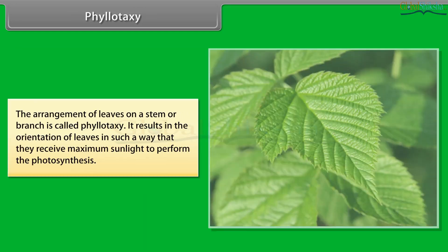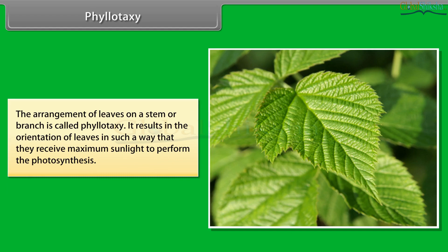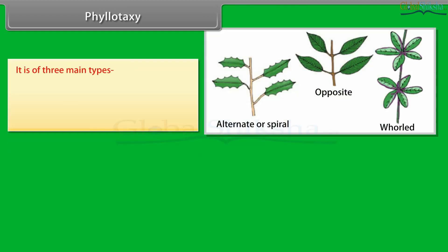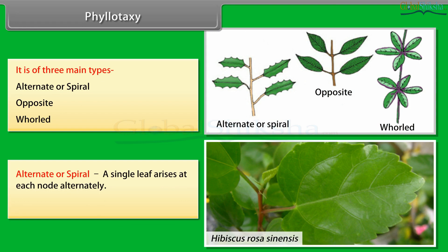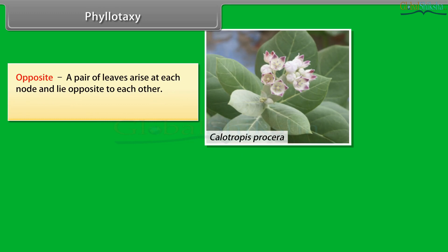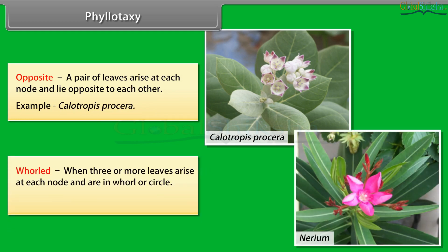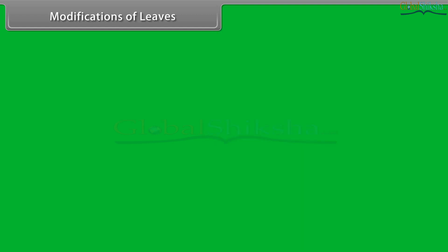The arrangement of leaves on a stem or branch is called phylotaxy. It results in the orientation of leaves in such a way that they receive maximum sunlight to perform photosynthesis. It is of three main types: alternate or spiral, opposite, and whorled. In alternate or spiral, a single leaf arises at each node alternately — example: Hibiscus rosa-sinensis. In opposite, a pair of leaves arise at each node and lie opposite to each other — example: Calotropis procera. In whorled, three or more leaves arise at each node in a whorl or circle — example: Nerium oleander.